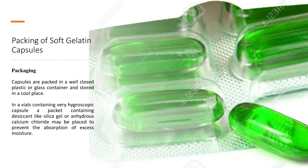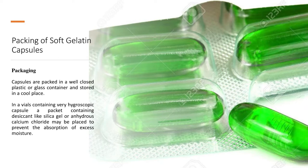Soft gelatin capsules have a high amount of plasticizer content as compared to hard gelatin capsules. Hard gelatin capsules have a low plasticizer content, with a ratio of 0.8 to 1. In vials containing very hygroscopic capsules like soft gelatin shells, a substance known as silica gel or anhydrous calcium chloride is used to absorb excess moisture. Desiccants are placed on top or swept up with cotton so that moisture is not able to penetrate.